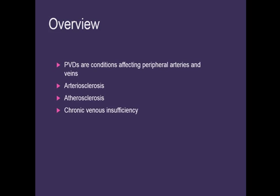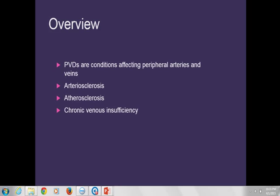Chronic venous insufficiency, abbreviated CVI, deals with inadequate venous return and vein or valve blockage. Blood pools in the lower extremities, which leads to stasis, and then can lead to ulcers and various problems.